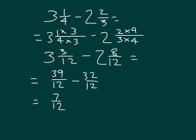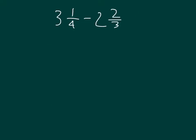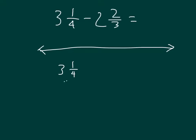So 3 and 1 fourth minus 2 and 2 thirds is equal to 7 twelfths. Now let's look at 3 and 1 fourth minus 2 and 2 thirds again, this time using a number line and thinking about this in another manner.